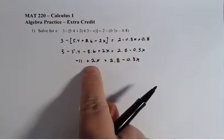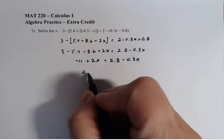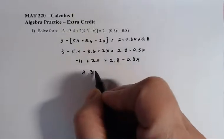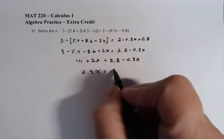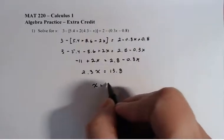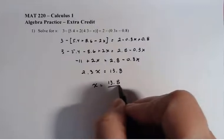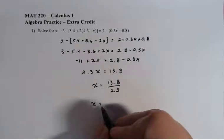I'm going to add 0.3x to both sides, and I'm going to add 11 to both sides. I divide both sides by 2.3, and then x turns out to be 6.